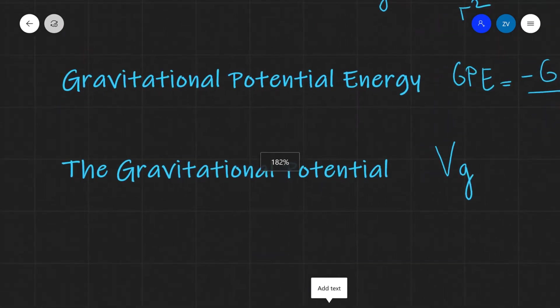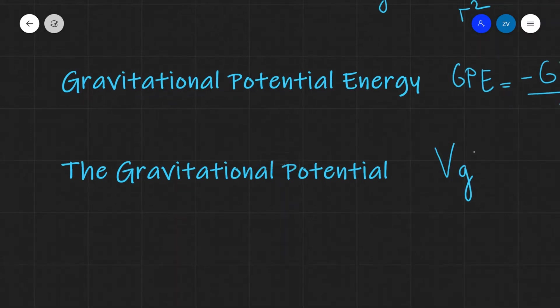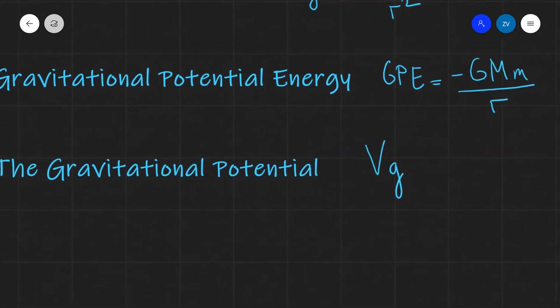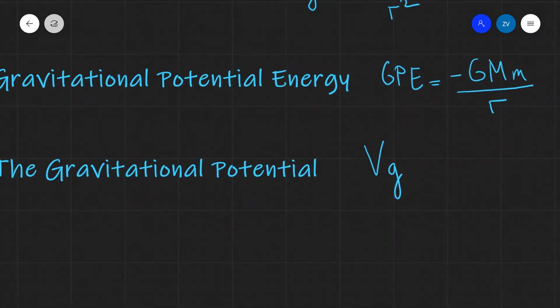This is often confused for velocity because it shares this V symbol. However, this is a capital V symbol. You can kind of think of it as similar to potential difference or voltage. However, it is the gravitational potential, and once again, this is equal to your gravitational potential energy per unit mass.